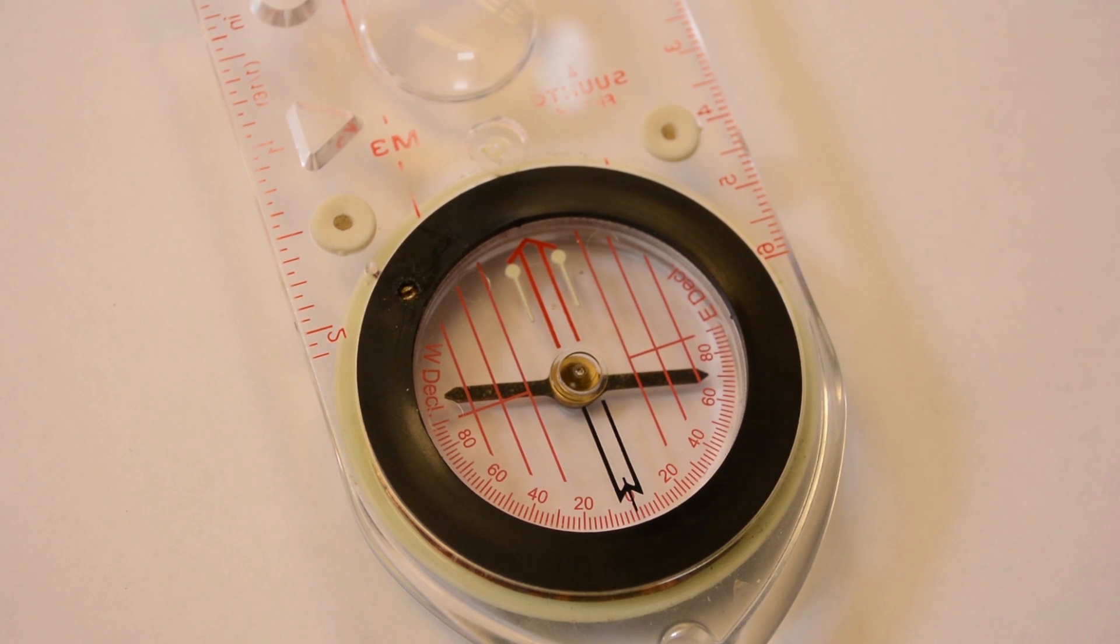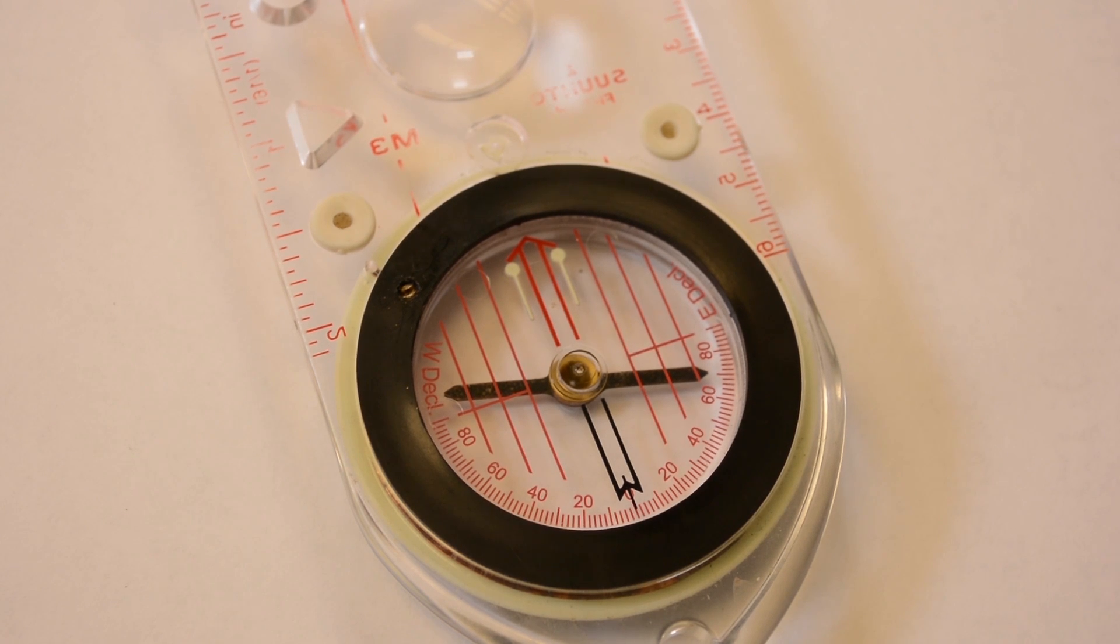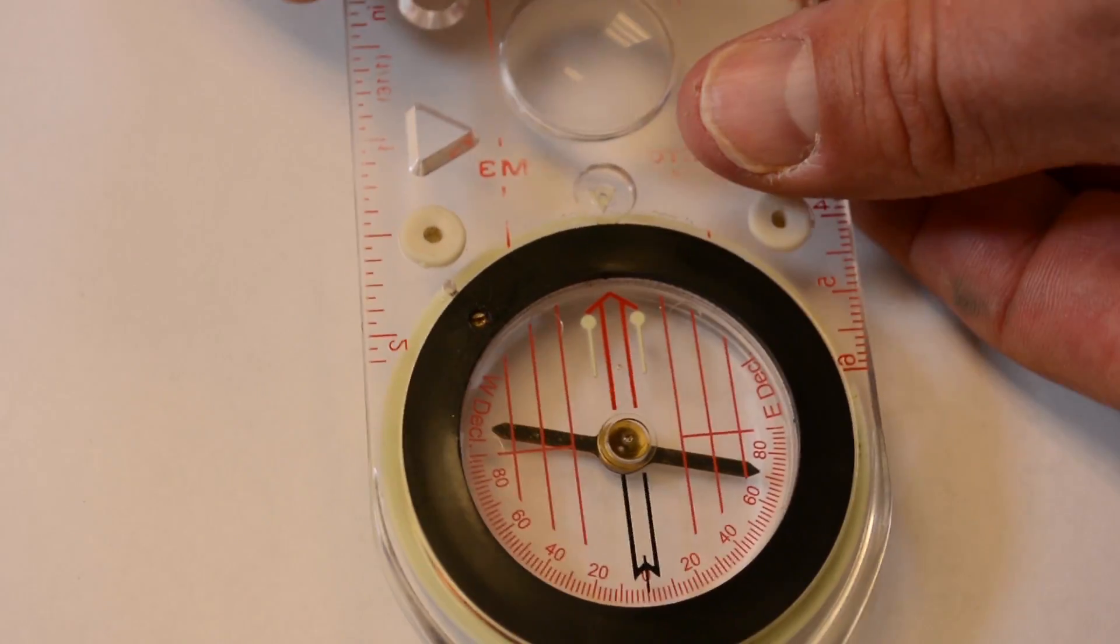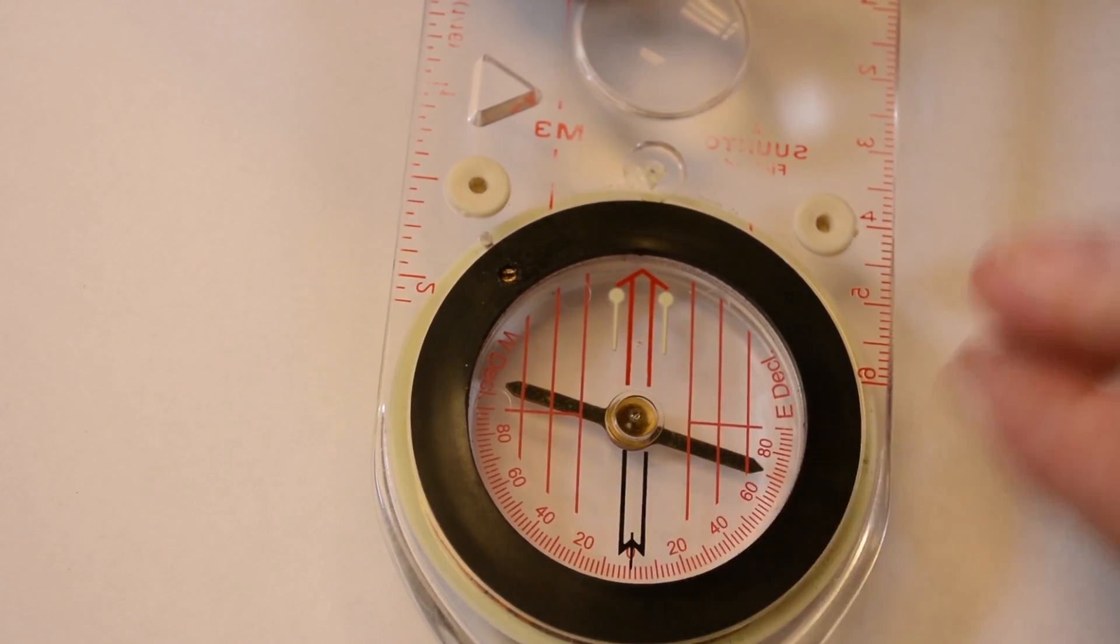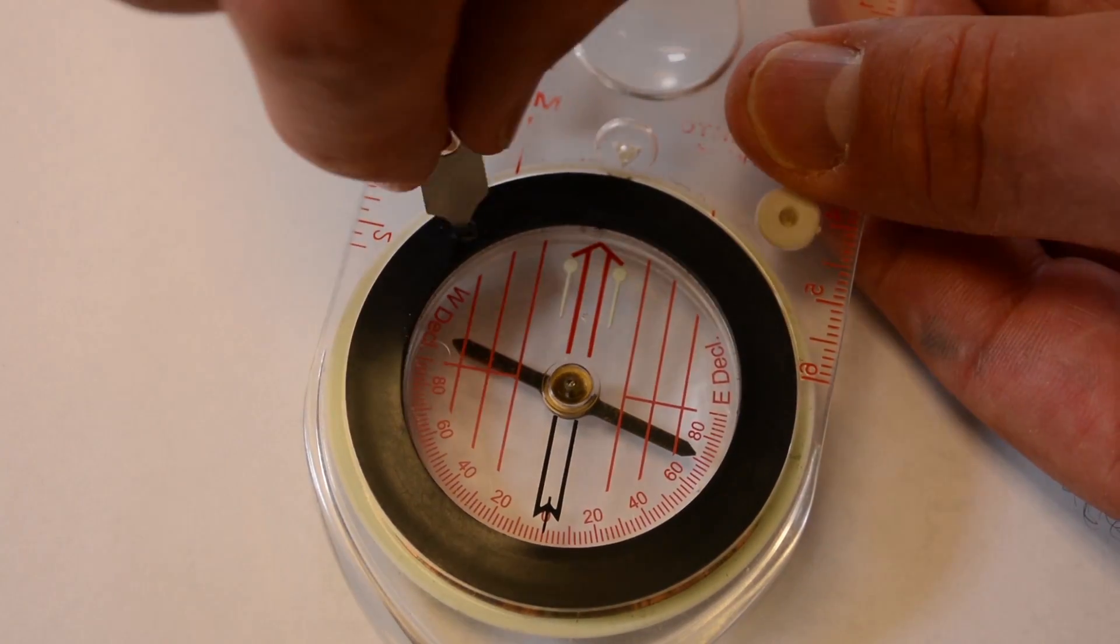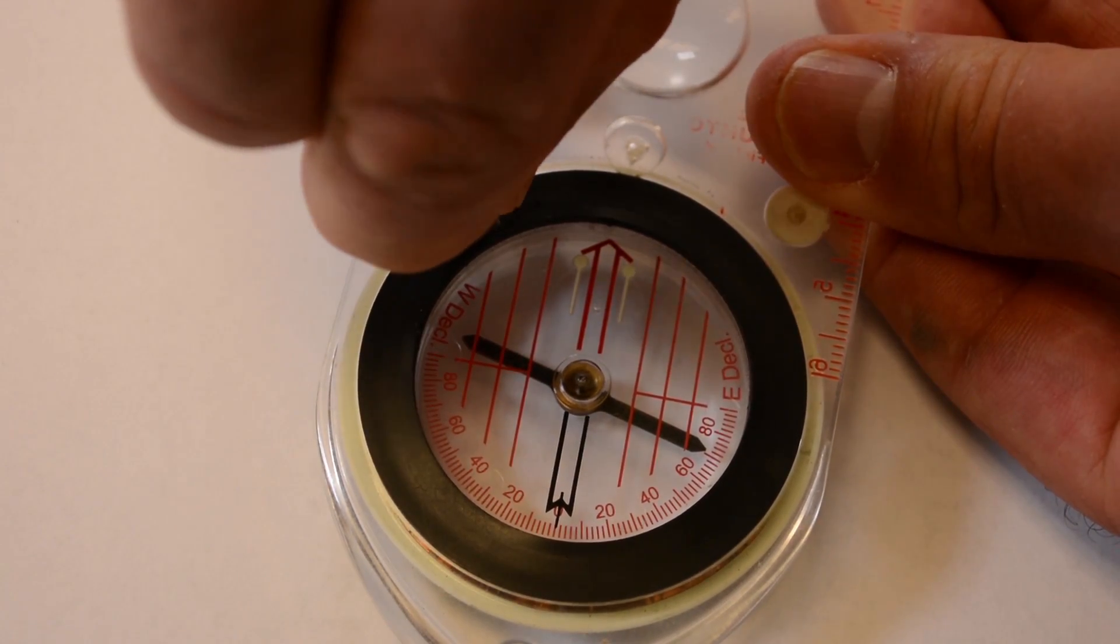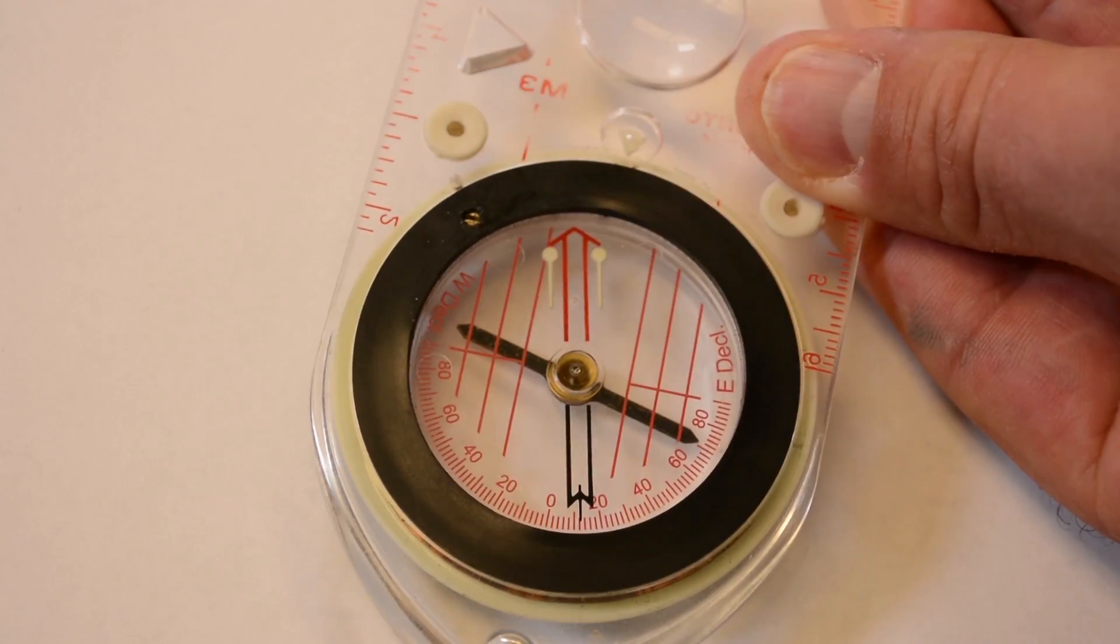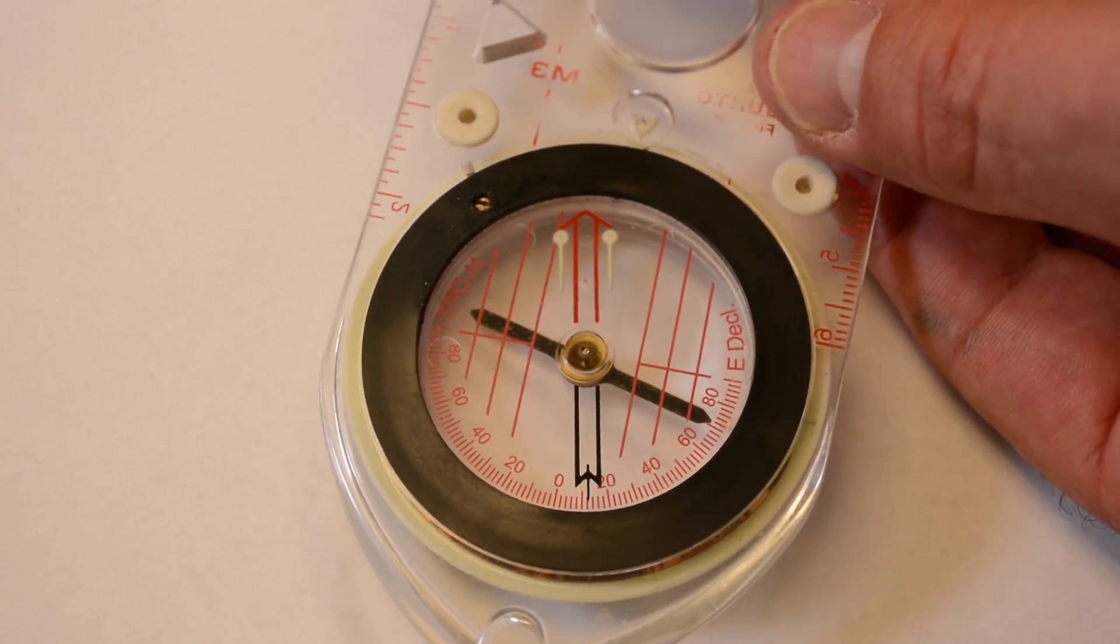To adjust your compass to east declination, you want to turn the screw clockwise and only just a little. On this compass, turning the screw about a half turn moves the declination a whole ten degrees. Let's try that. Keep your eye here on the bottom of the orienteering arrow as I turn the screw clockwise. Notice the arrow's moving off to the right. That's just about 16 degrees and we can stop and leave it there.